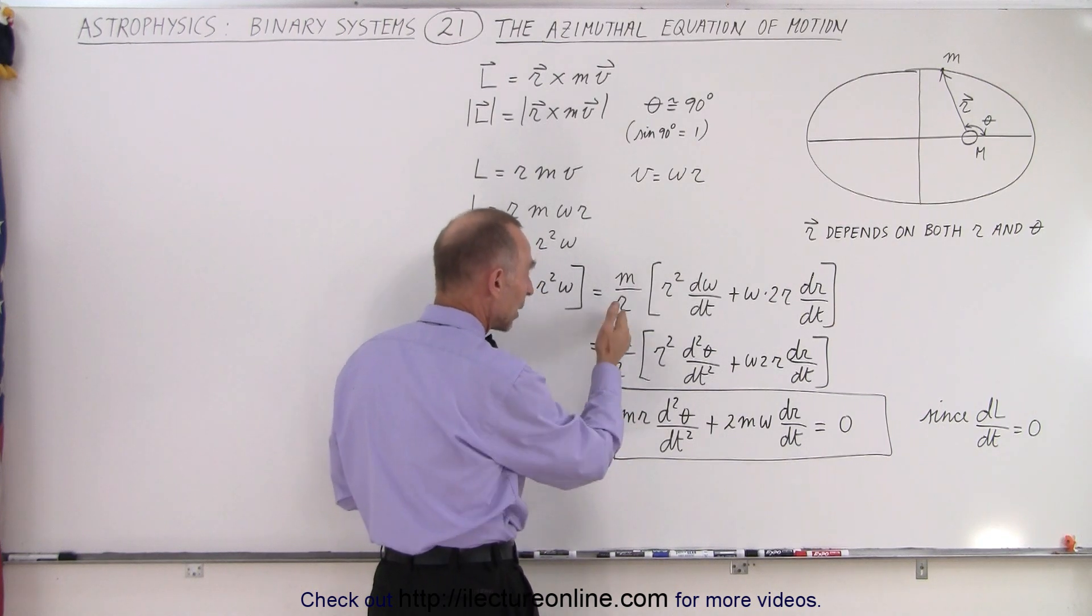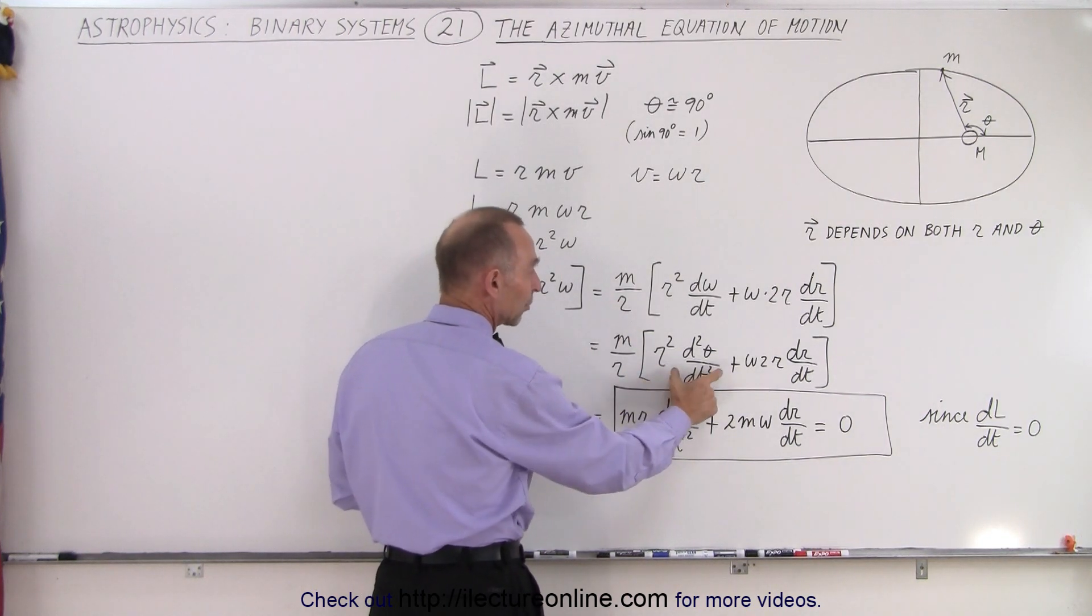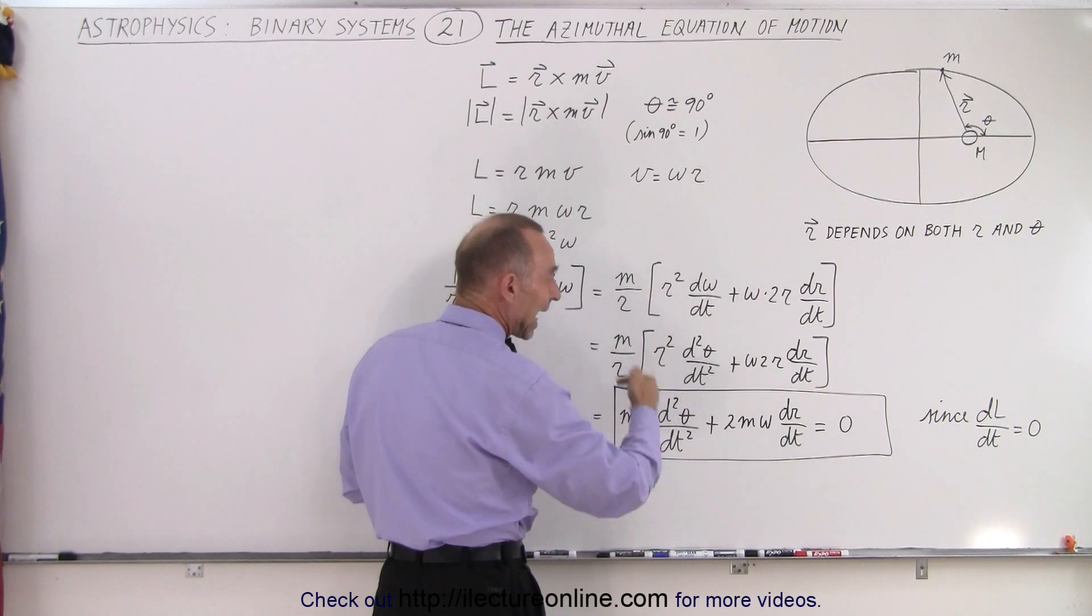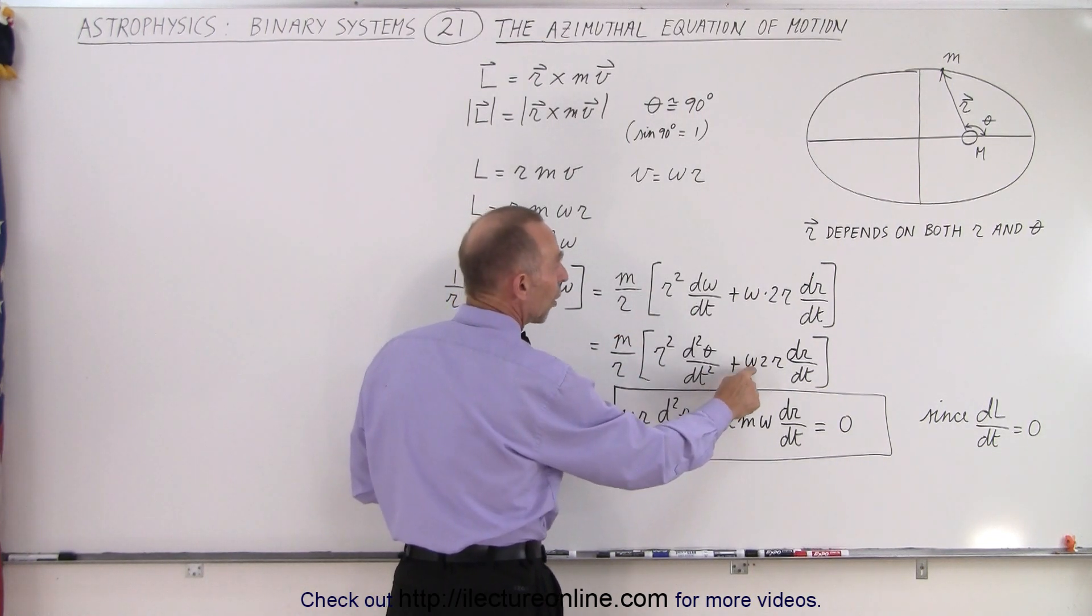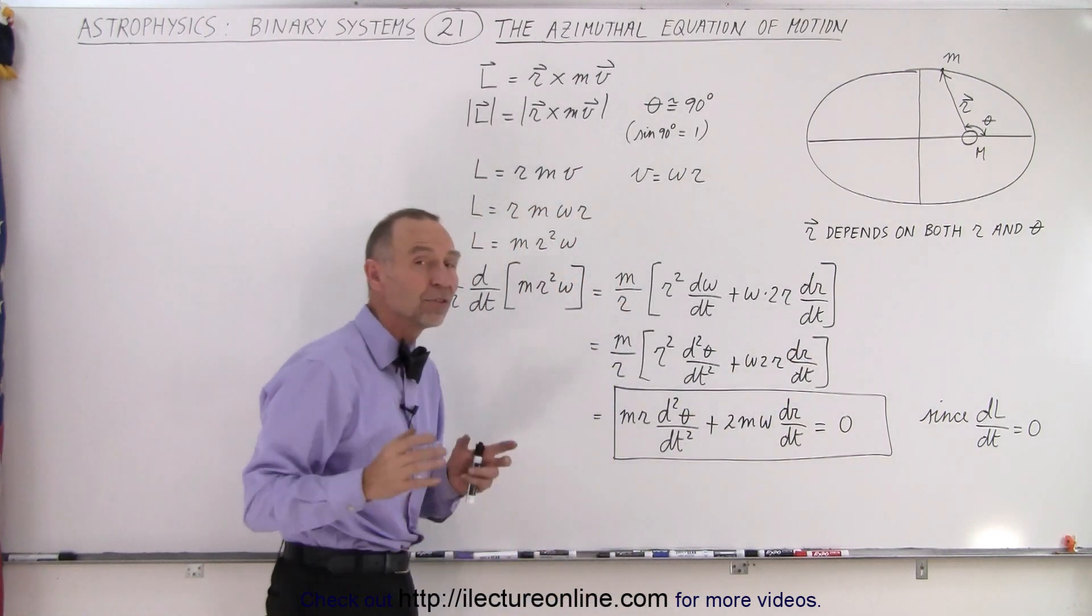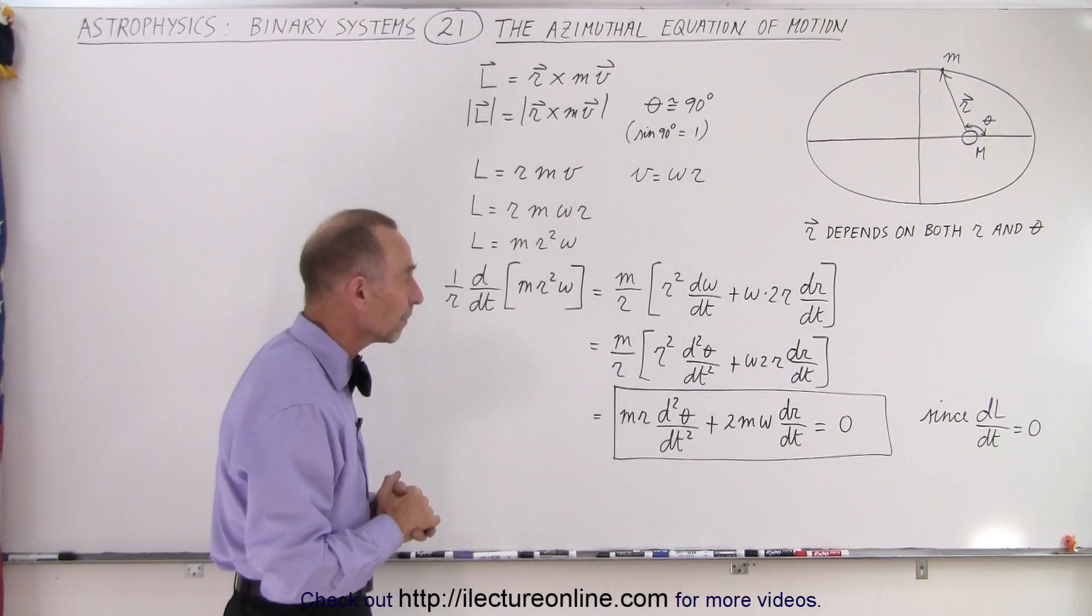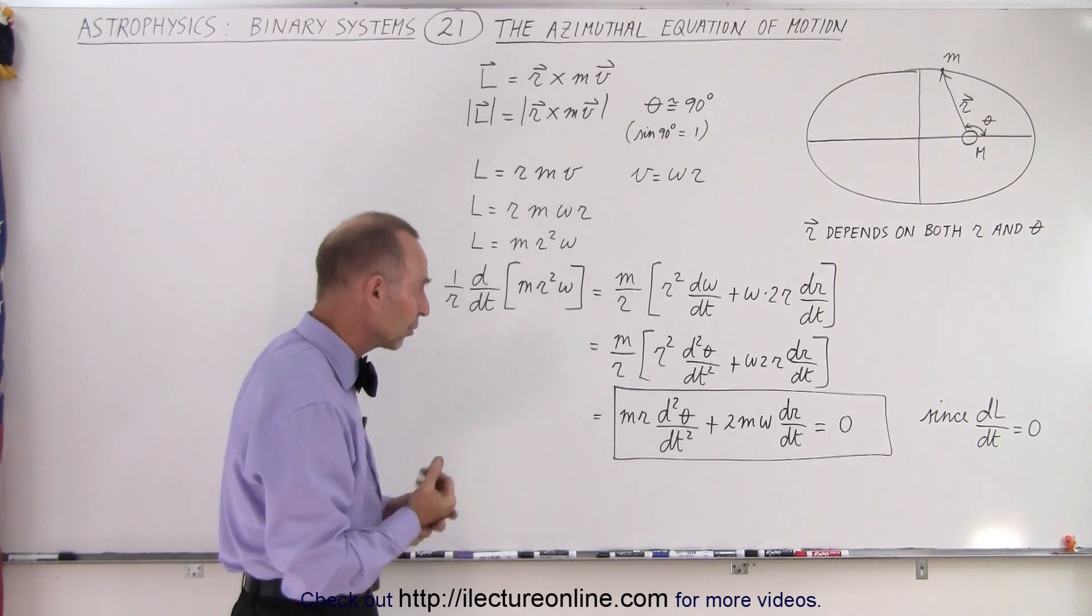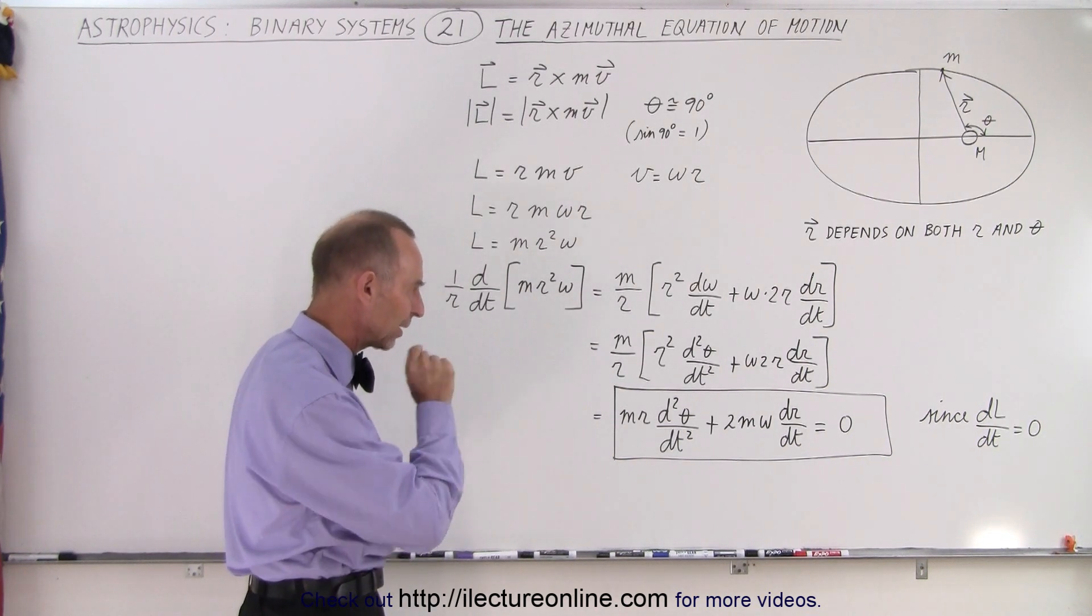So then we get M over R times R squared times the second derivative of the angle with respect to time, plus Omega times two times R times the first derivative of the distance of the position vector. Remember these are magnitudes.